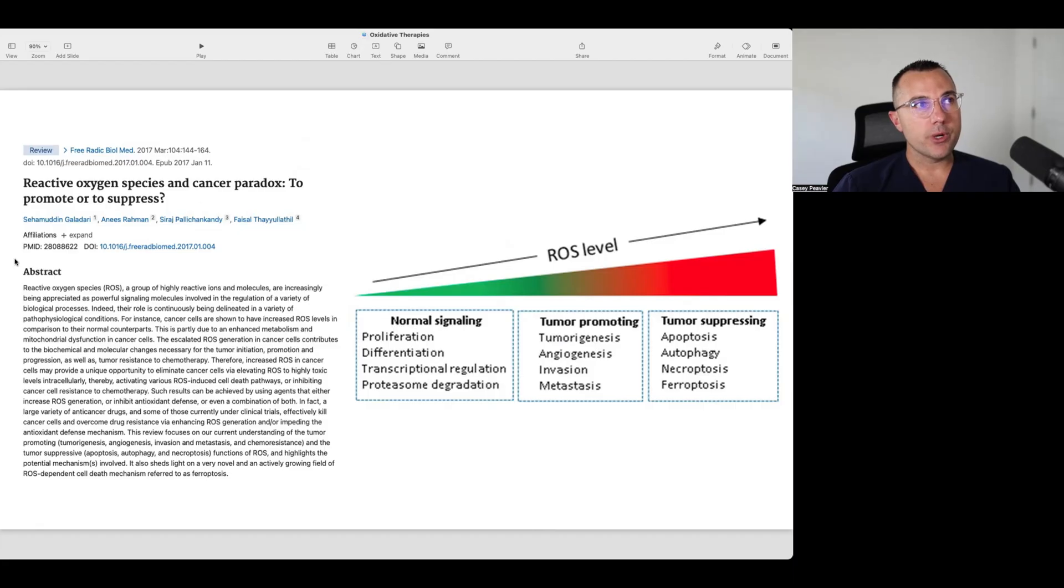I took this paper from March 2017 titled reactive oxygen species and cancer paradox to promote or suppress. It says that reactive oxygen species, ROS, a group of highly reactive ions and molecules are increasingly appreciated as powerful signaling molecules involved in the regulation of a variety of biological processes. Cancer cells are shown to have increased ROS levels in comparison to their normal counterparts. This is partly due to the enhanced metabolism and mitochondrial dysfunction in cancer cells.